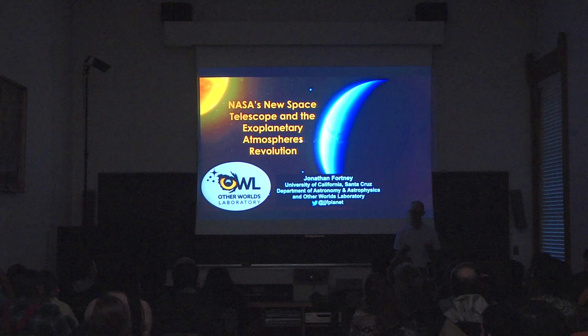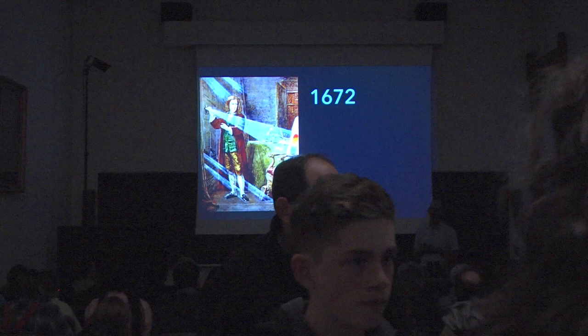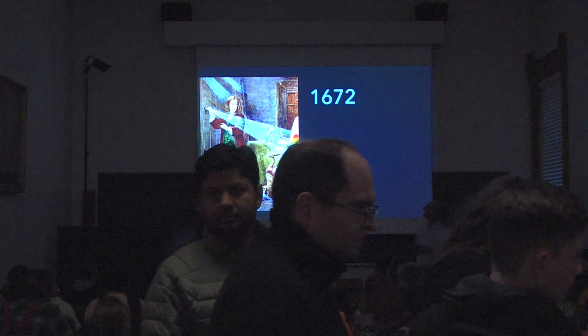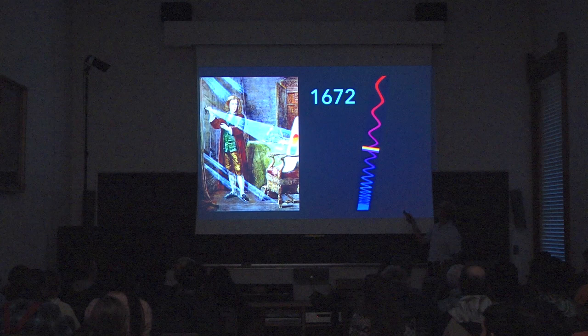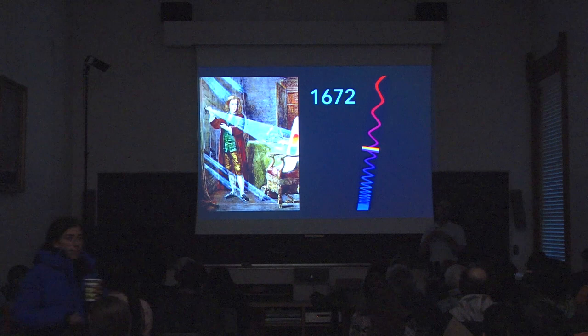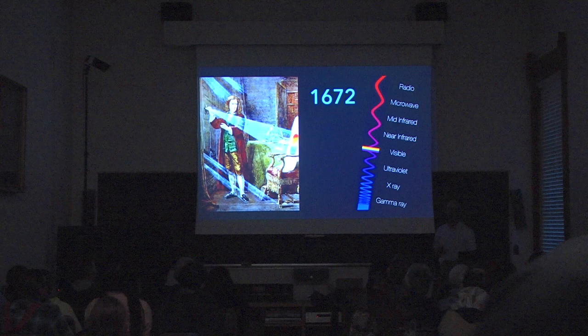Isaac Newton was the first person to understand how light could be separated out into its colors, in the late 1600s. The light we see from red to violet is just a very narrow range of the electromagnetic spectrum. Going to longer wavelengths, that's the near infrared, mid infrared, microwave, and radio waves. Going to shorter wavelengths, that's the ultraviolet, X-ray, and gamma ray. In modern astronomy, we use all of these different wavelengths of light.